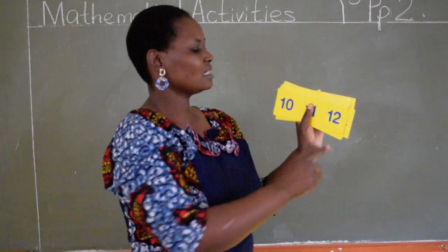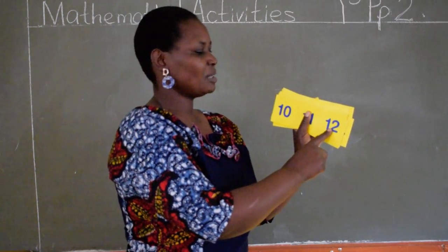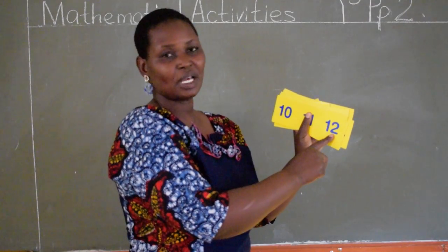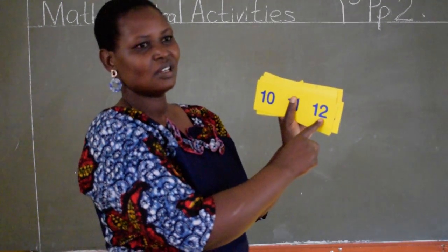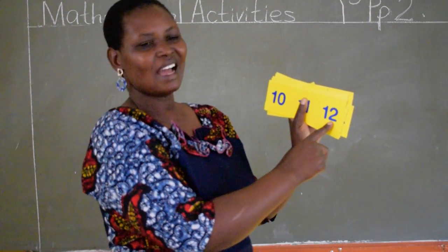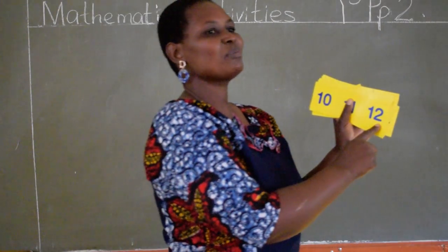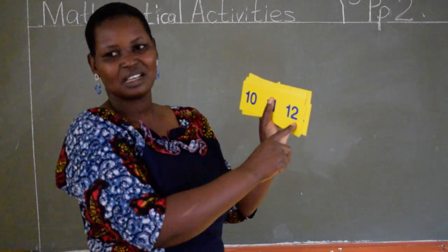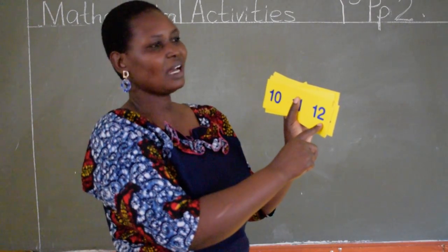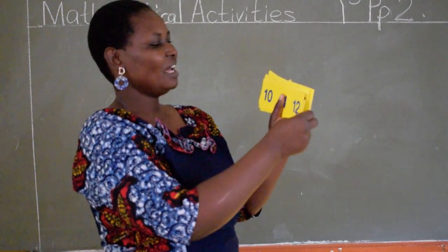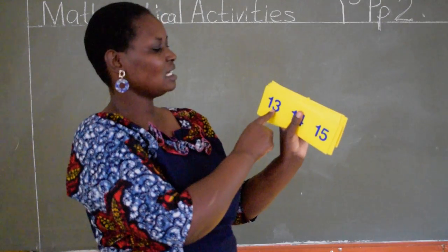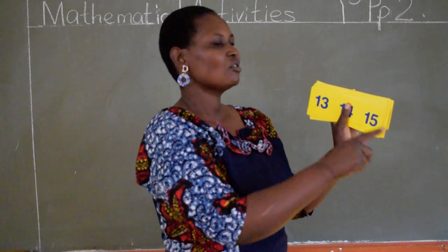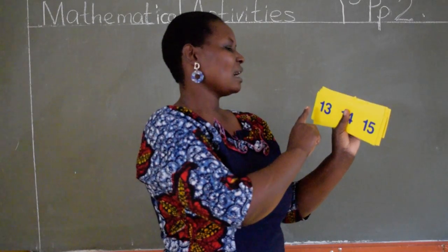Which number is this? Very good. This is number 12. Can you say 12? Which number comes after number 12? Autoria? Very good. Number 13 comes after number 12. From number 12 we move to number 13.